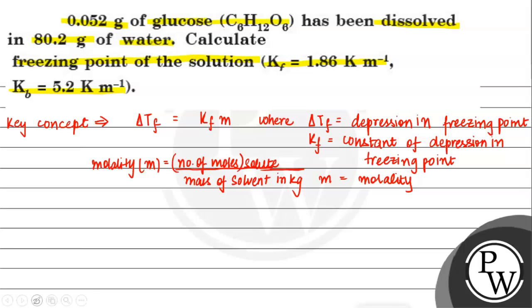Now further moving on to the question. First of all, we have seen what is given. We have given mass of glucose and we have given mass of solvent.